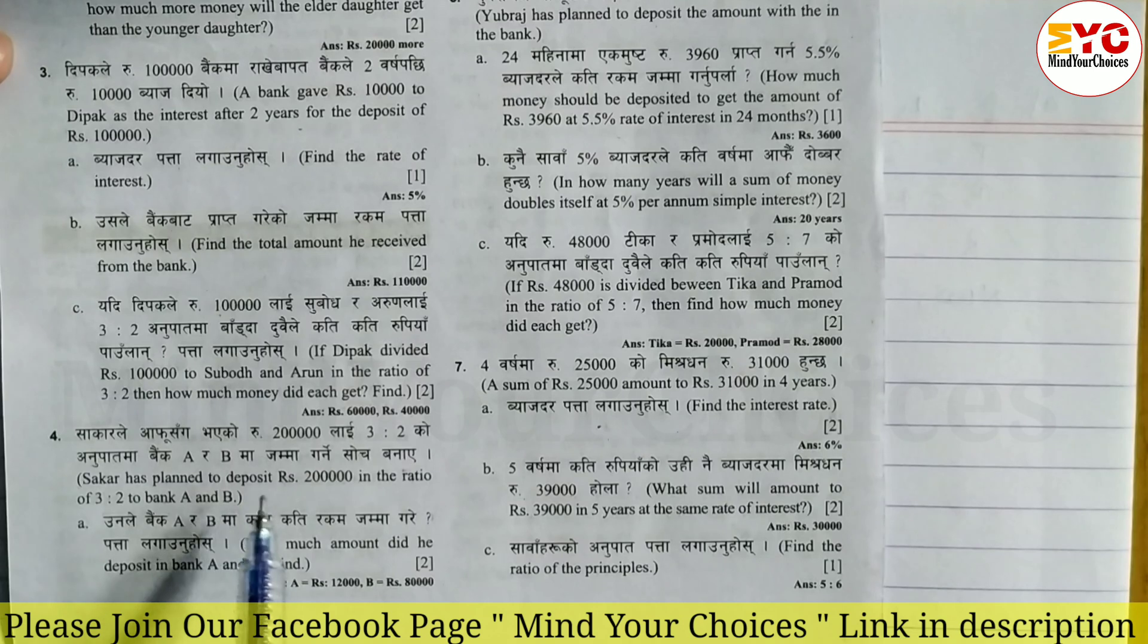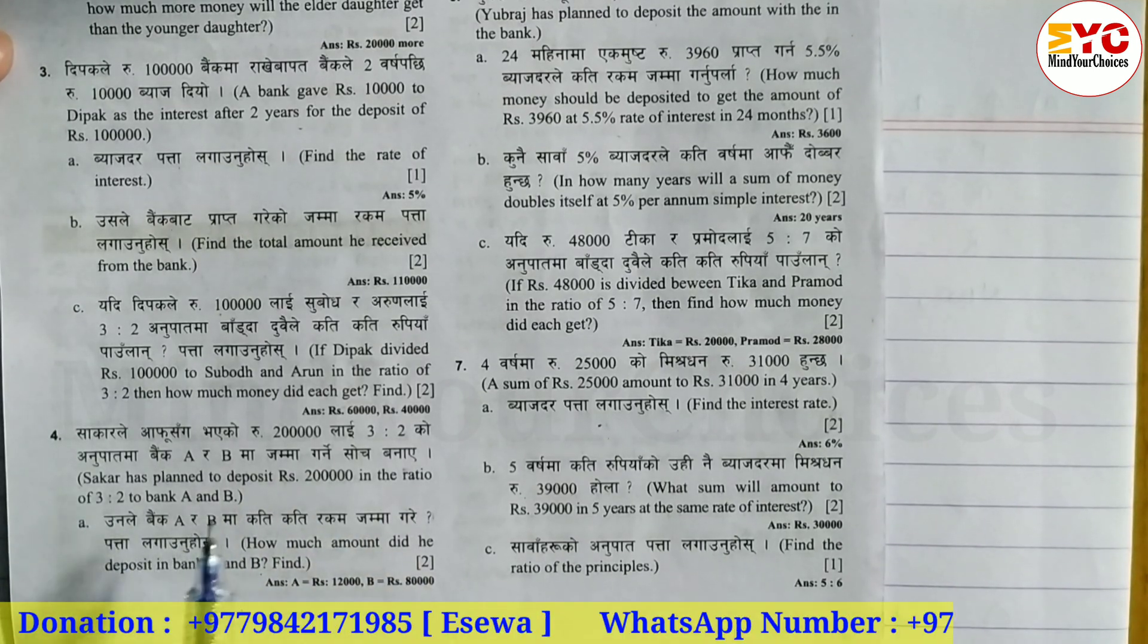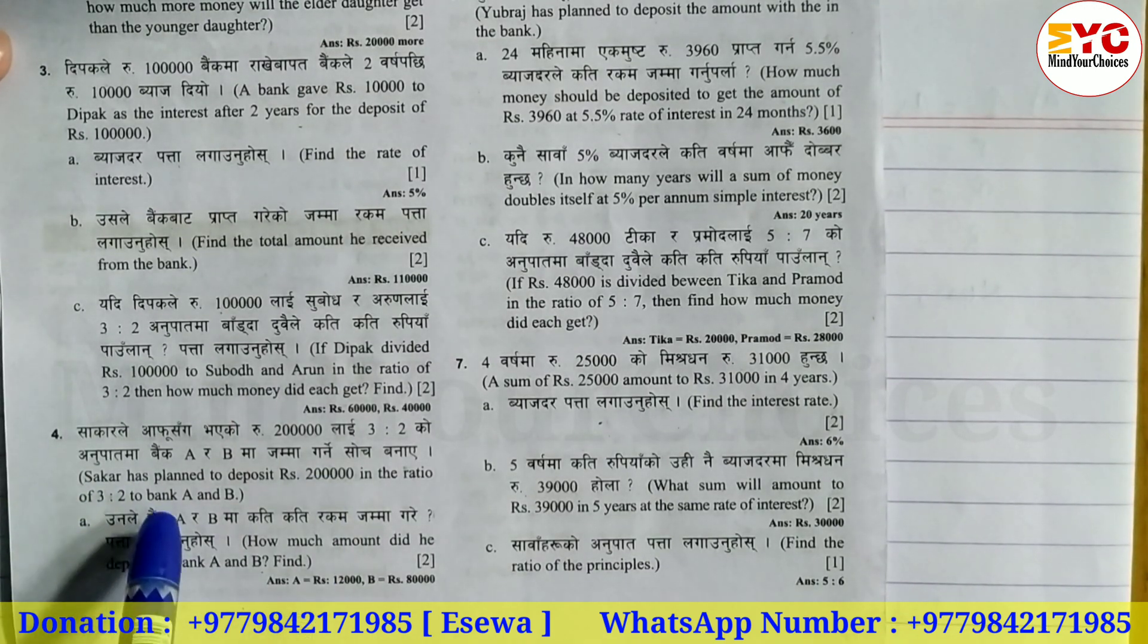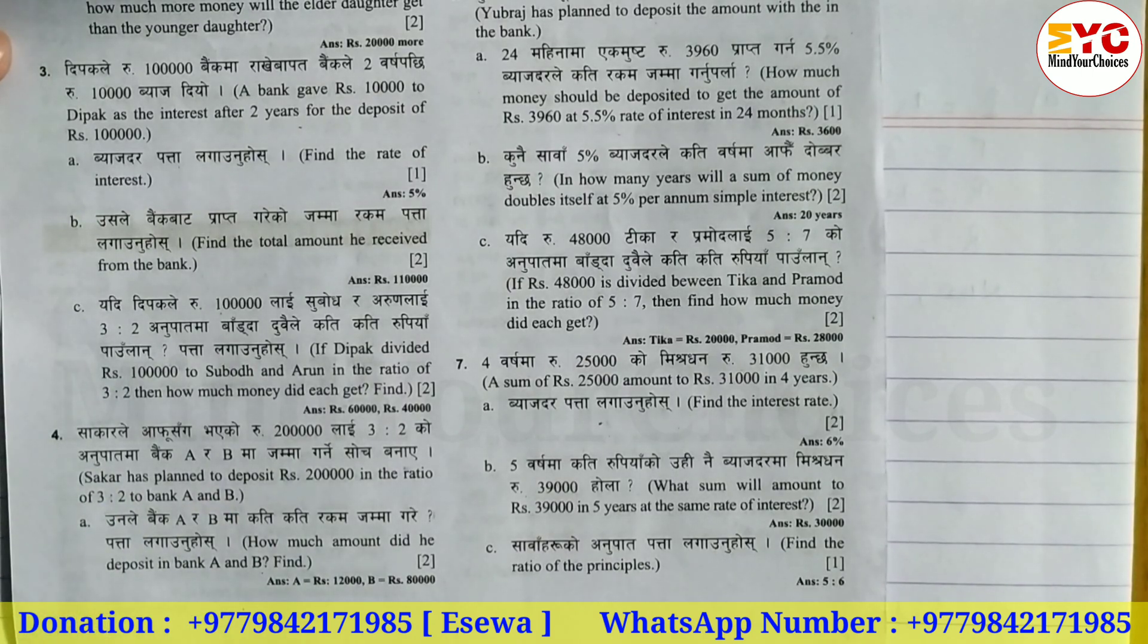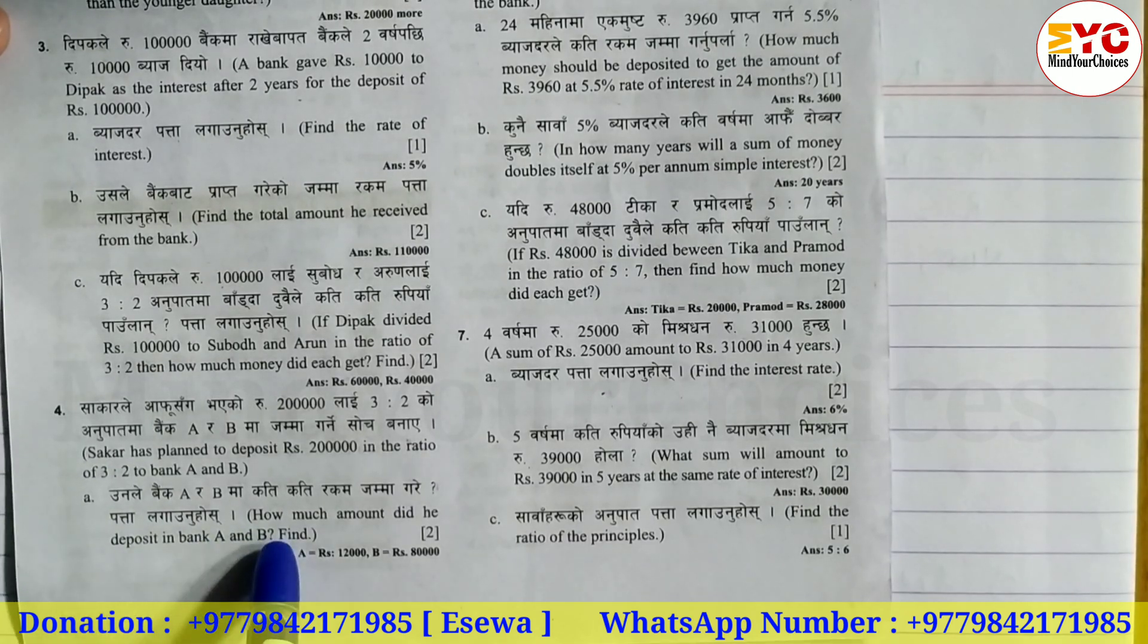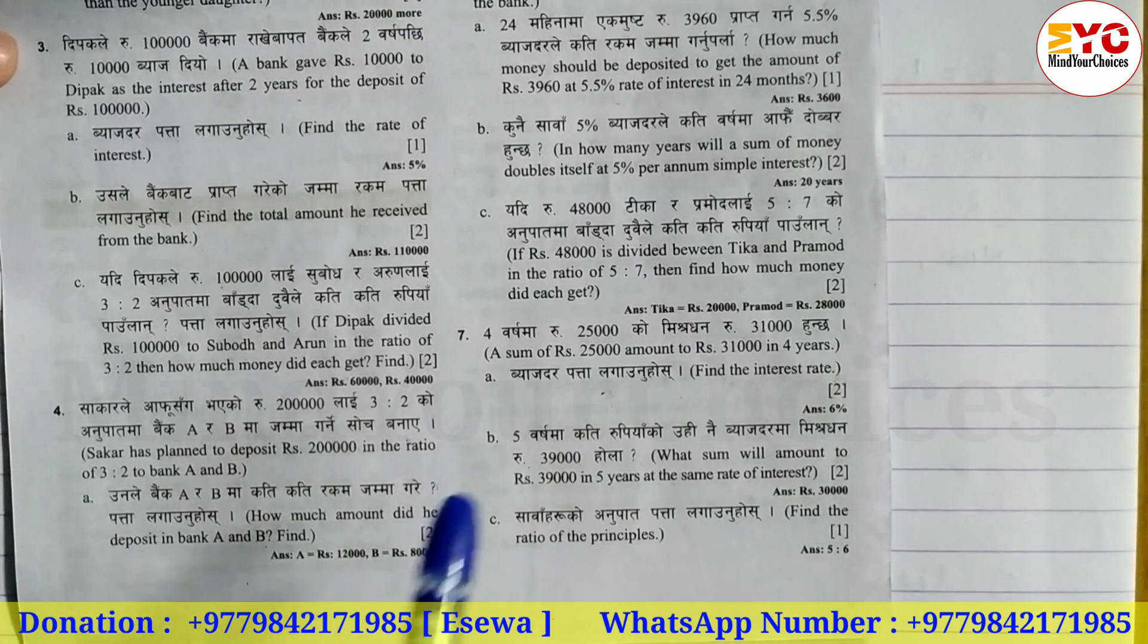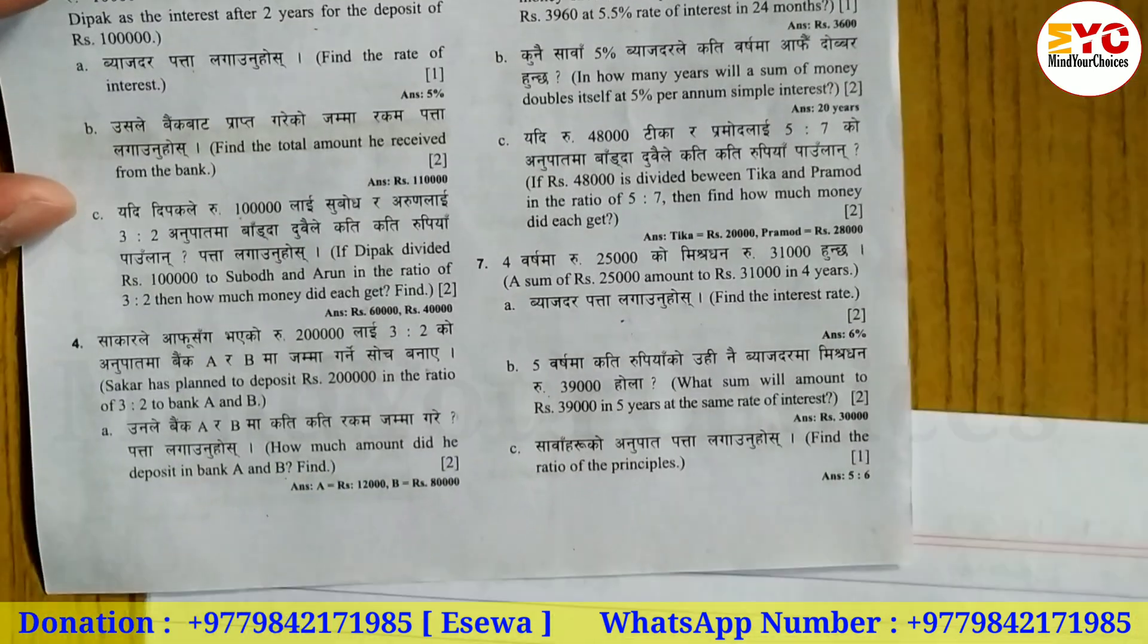Question 4 you can see here: Sarkar has planned to deposit 2 lakhs in the ratio 3 to 2 in bank A and B. Sarkar has 2 lakhs, which he will deposit in banks A and B in the ratio 3 to 2. How much amount did he deposit in bank A and bank B? Bank A maa kodhi paishya raaksa, bank B maa kodhi paishya raaksa, we need to find out.